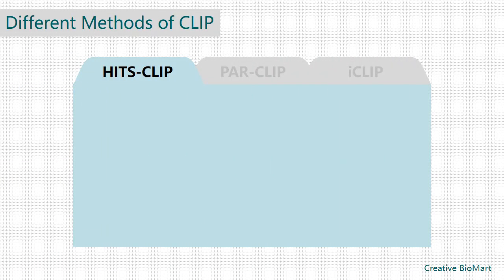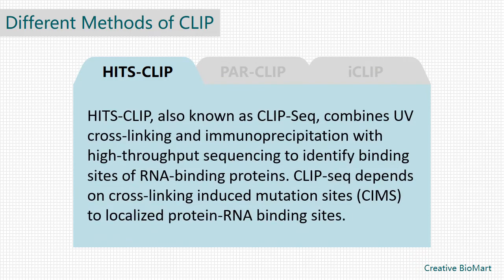There are three commonly used methods of CLIP. HITS-CLIP, also known as CLIP-seq, combines ultraviolet cross-linking and immunoprecipitation with high-throughput sequencing to identify binding sites of RNA-binding proteins. CLIP-seq depends on cross-linking induced mutation sites to localize protein RNA-binding sites.